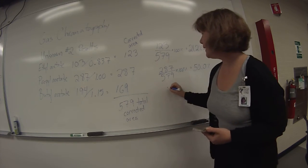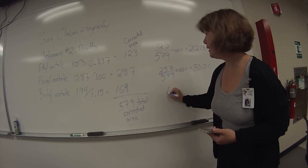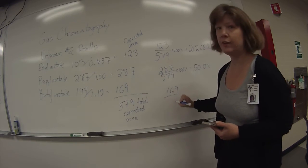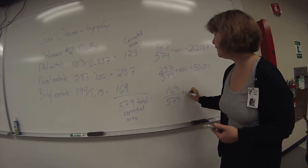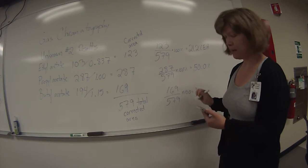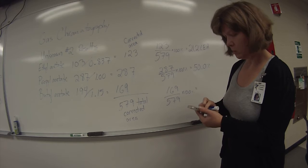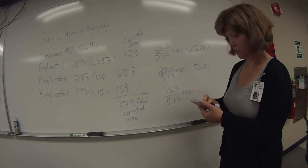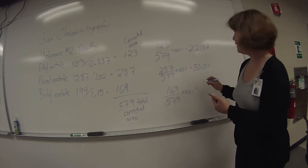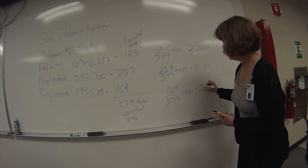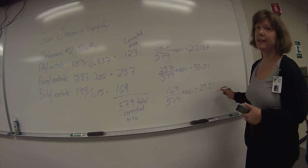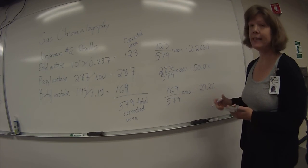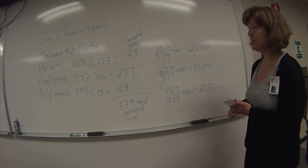For butyl acetate, you have 169 divided by the total corrected area, 579 times 100%, and that is 29.2%.